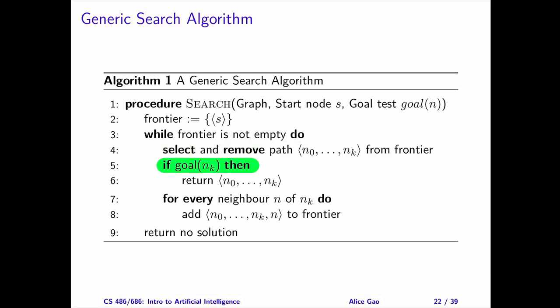Second, on line 5, we perform the goal test when removing the path from the frontier, not when adding the path to the frontier. There are two reasons for doing this. First, the goal test can be costly to perform, so we should delay this computation if it's unnecessary. Second, the first path to a goal node added to the frontier may not be the path with the least cost.